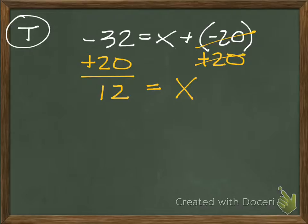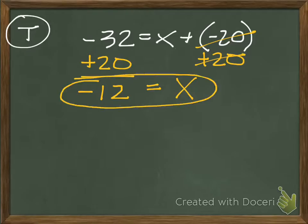And then the last part of that jingle is, keep the sign of the bigger number, then you'll be exact. So the sign of the bigger number in this case is 32. And since 32 is negative, my answer is going to be negative 12. So that's my answer.